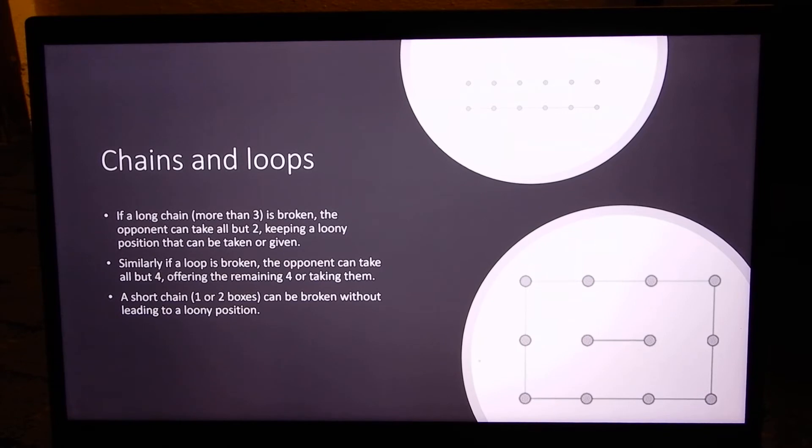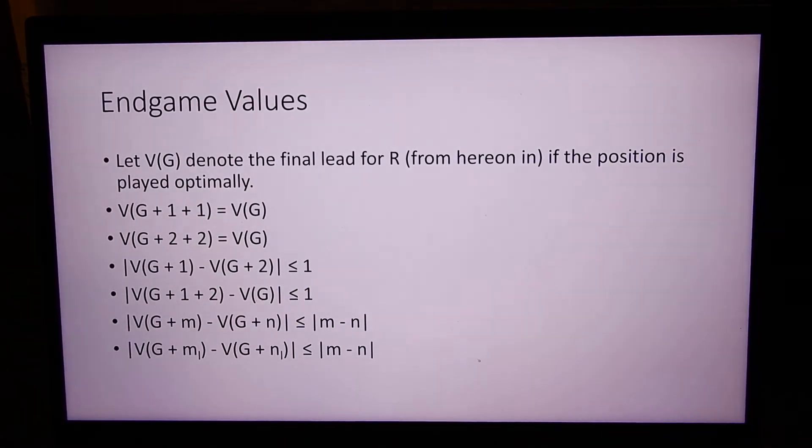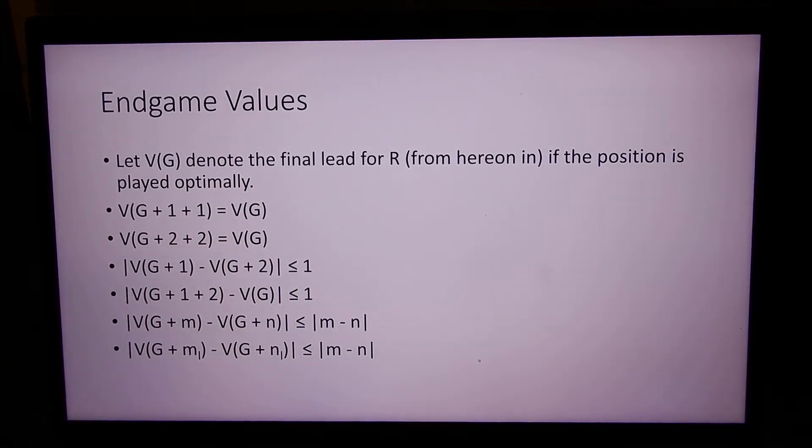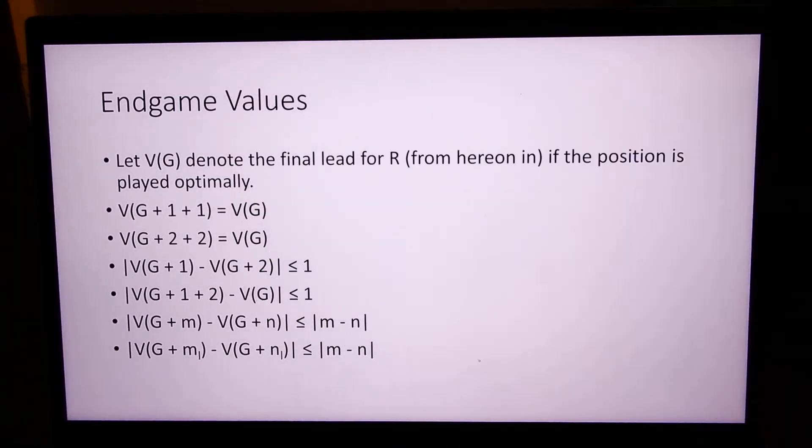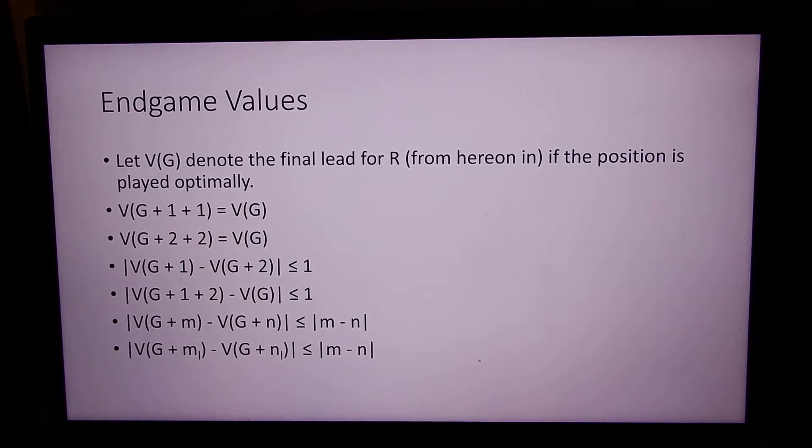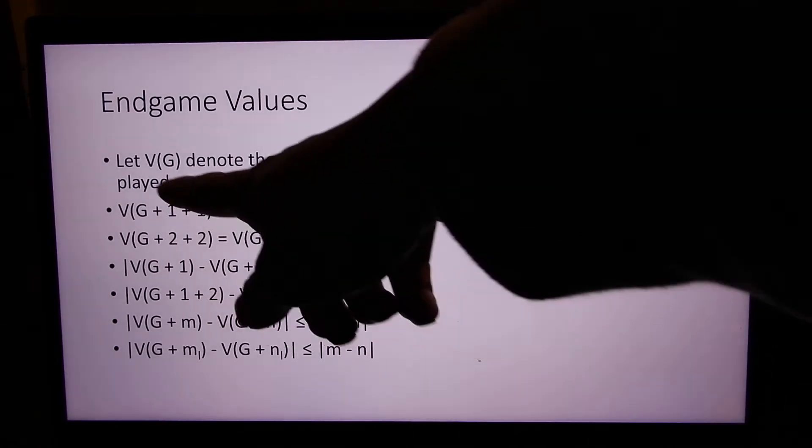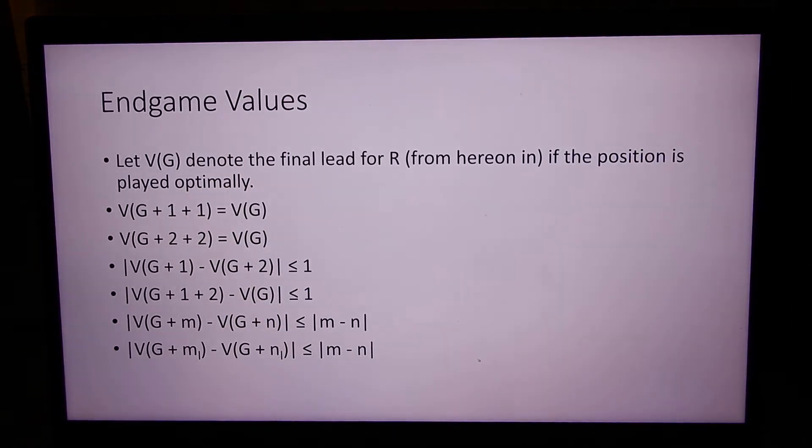These two positions have very interesting endgame properties. In the endgame position, what's really interesting is the value. If you have two short chains of one box each, it turns out both sides are going to take one. Left is going to sacrifice one box, right takes it, and then back to left. It turns out they cancel each other out in terms of value.